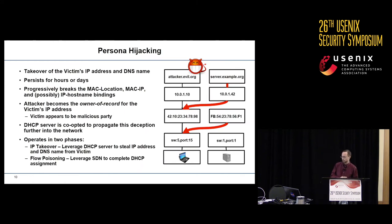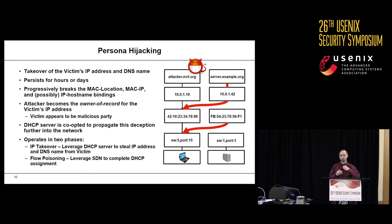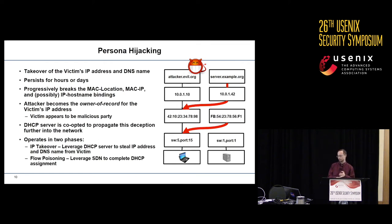Looking at the persona hijacking attack first, the goal is to take over the victim's IP address and DNS name and to persist for hours or days. The attack operates by first breaking the MAC address-to-location, then MAC address-to-IP address, and possibly the IP address-to-hostname binding. What's interesting is that the attacker becomes the owner of record of the victim's IP address — so if the attack were detected, it would actually be the victim that appears to be the malicious party. Additionally, this attack co-opts the DHCP server to propagate the deception further into the network, deceiving audit systems or network visualization tools. The attack itself operates in two phases: an IP takeover phase and a flow poisoning phase.